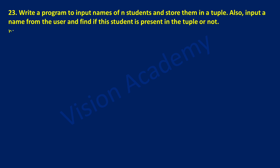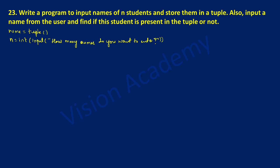Now let us take a variable called name and initialize it with an empty tuple. Next I'll take one more variable called n of type integer, and inside the input statement I'll ask the user to enter how many names they want to enter. Next, using an iterative statement, I'm going to enter the names one by one. I'll write for i in range of n and then put a colon as per the syntax of the for loop.